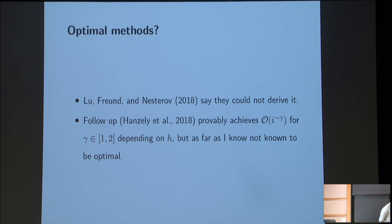Lu, Freund and Nesterov in their 2018 papers say they couldn't derive it, which is a bit terrifying. And then in follow-up work, Hanzely, oh, there's three authors. I forget all the three authors. I'm very sorry. Provably achieve, have an algorithm that provably achieves 1 over i to the gamma for gamma in 1 to 2, depending on your choice of h. But as far as I know, this is not known to be optimal. And we're still trying to get a method that achieves 1 over i squared.